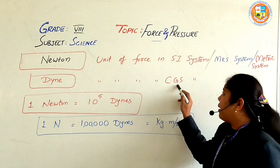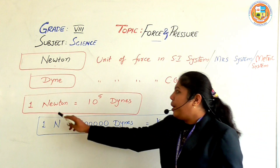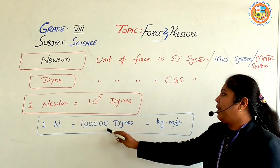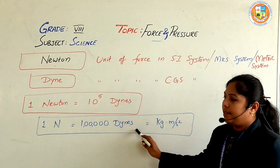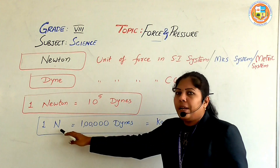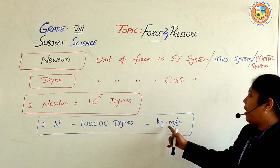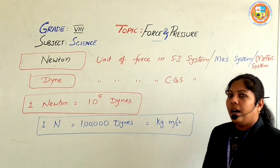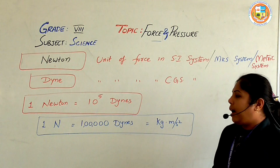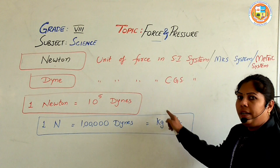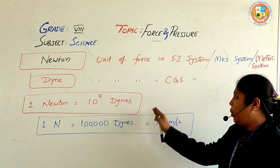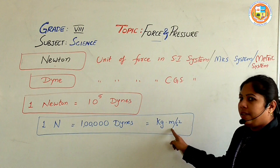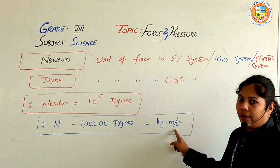One Newton equals kilogram meter per second squared. That means one Newton is the amount of force acting on one kilogram mass to accelerate it at one meter per second squared.